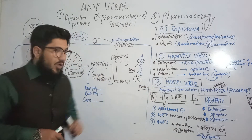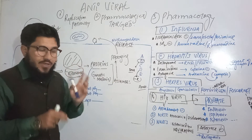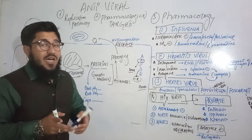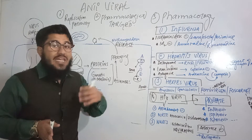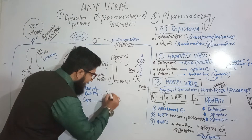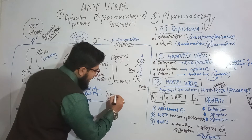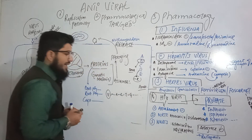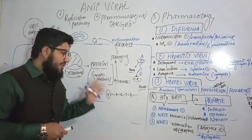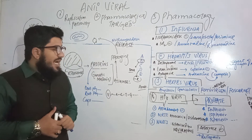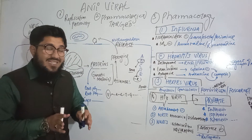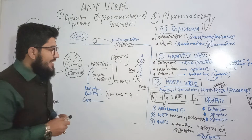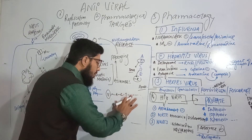Let's start with acyclovir. Its site of action is viral DNA — not the host DNA. Regarding its mechanism of action: the virus synthesizes its DNA by chaining up nitrogenous bases — adenine, cytosine, thymine, guanine, etc. — linked together by the enzyme DNA polymerase. Acyclovir is actually an analog of guanosine. When acyclovir is administered to the patient, it comes and takes the place of guanosine.